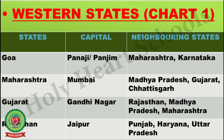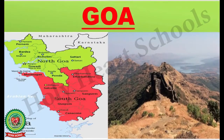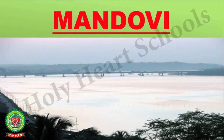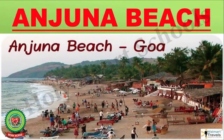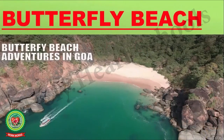Now, let's discuss the landform, climate, rivers and the visiting places of these Western states. Goa is a state in western India which is known for its beaches. The landform of Goa is plain and hilly, and its climate is hot and humid. The main river that flows through Goa is Mandovi. The visiting places of Goa are Panaji, Anjuna Beach, Butterfly Beach, etc.